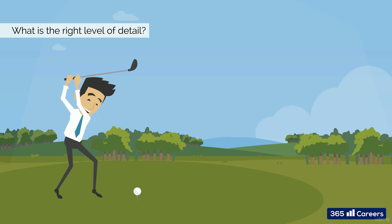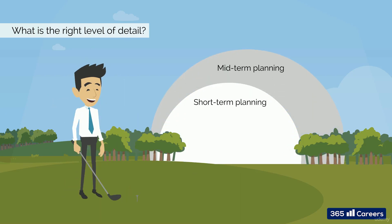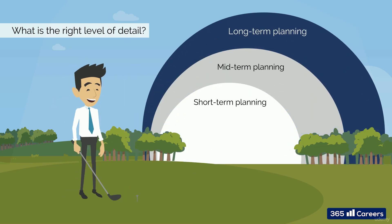What is the right level of detail that a financial model should have? Usually, in corporate finance, we can distinguish between short-term and long-term planning. Short-term planning is a firm's budget, which is based on a chart of accounts with line items for each department. Operating expenses will contain an account called travel expenses, showing all travel expenses for a given period.